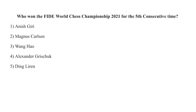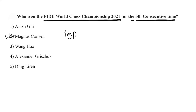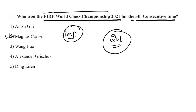Magnus Carlsen won the FIDE World Chess Championship 2021 for the fifth consecutive time. He has been the world number one chess player since 2011. Magnus Carlsen belongs to Norway.